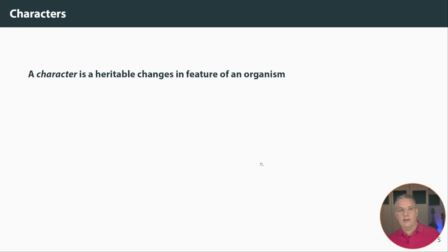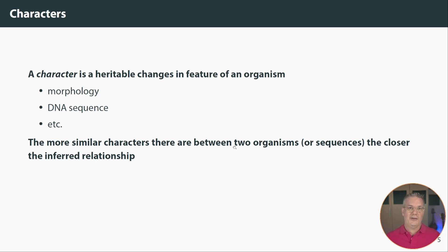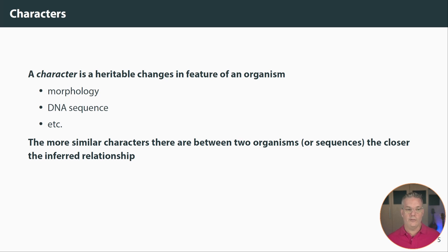When we say a character, it could be an alphabetic character — in fact, it might be a letter when we're working with DNA and protein sequences. But here we're thinking of a heritable change in a feature of an organism. So it might be morphological, it can be DNA sequence, and so on — lots of different forms of characters, so long as they are heritable changes that we can observe and document. The general idea is that the more similarity there is in terms of characters between two organisms or sequences, the closer the inferred relationship is between them. That's the general principle on which phylogenetic trees are constructed.